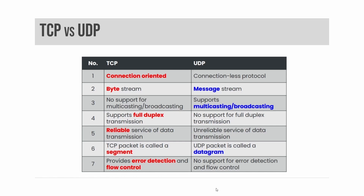UDP is a simpler and faster cousin to TCP. UDP is commonly used for applications that are lossy or can handle some packet loss, such as streaming audio and video. It is also used for query response applications, such as DNS queries.